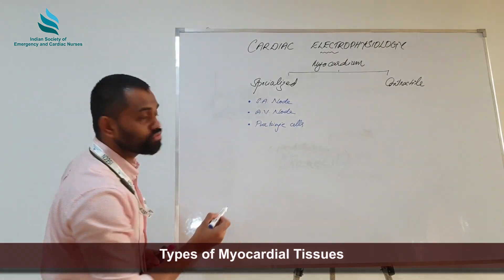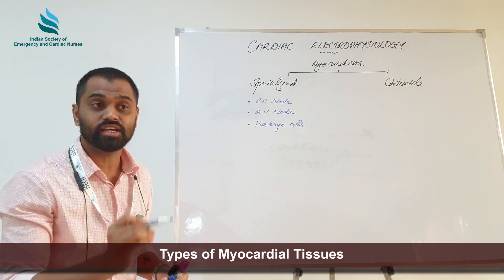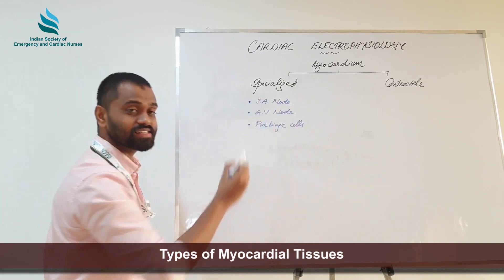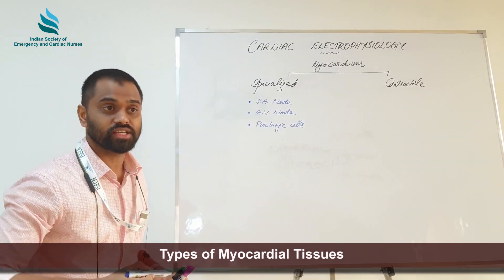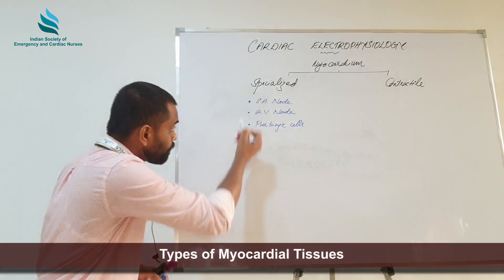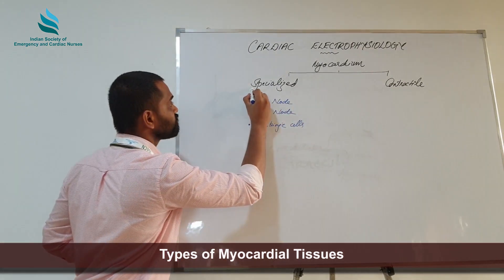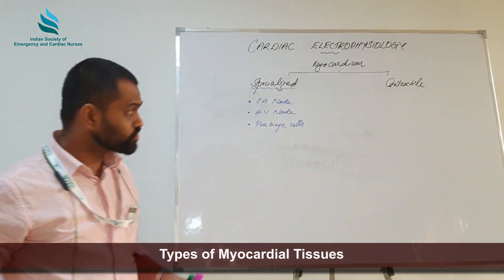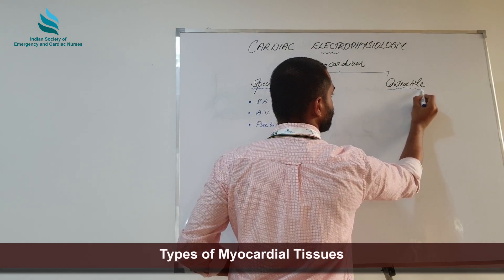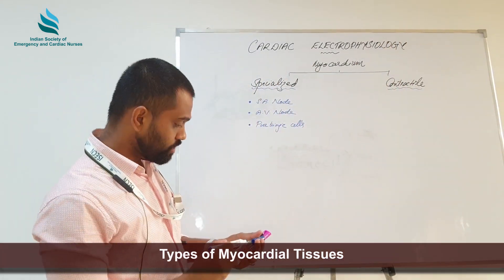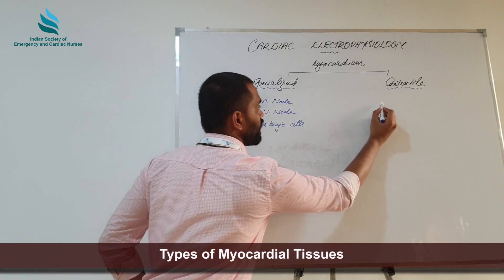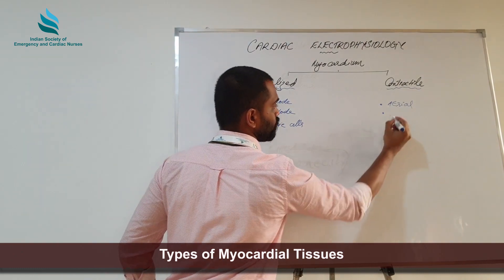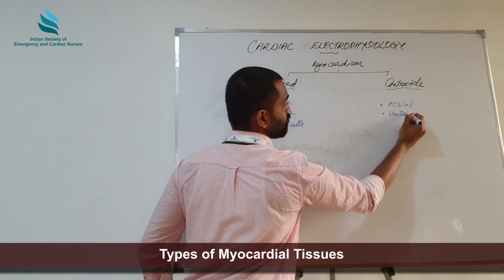The AV node is specialized in slow conduction. Purkinje cells have sodium channels and are specialized in fast conduction. These special properties are why they are classified under specialized myocardium. In addition, we have contractile myocardium, which includes atrial contractile myocardium and ventricular contractile myocardium.